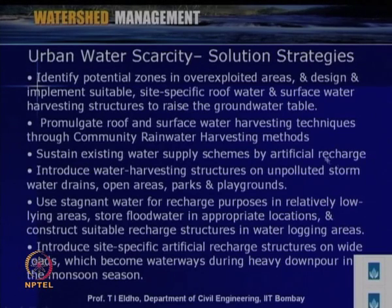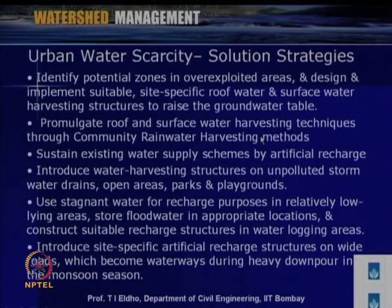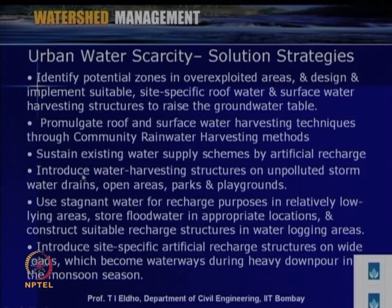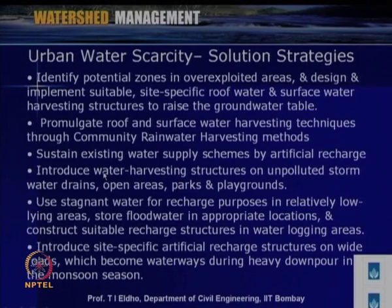Other strategies include sustaining existing water supply schemes by artificial recharge. Due to efforts by government and non-government organizations in Delhi and Chennai in recent years, significant progress has been made. We can also introduce water harvesting structures on unpolluted storm water drains, open areas, parks, and playgrounds — increasing recharge beyond natural infiltration. Additionally, stagnant water can be used for recharge in low-lying areas, flood water stored in appropriate locations, and suitable recharge structures constructed in waterlogging areas.